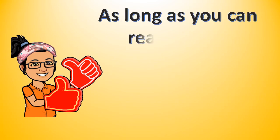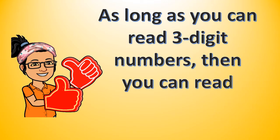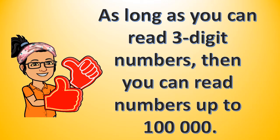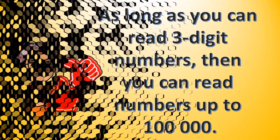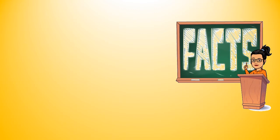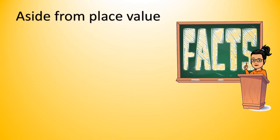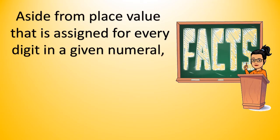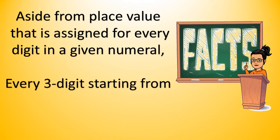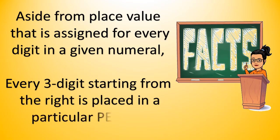Did you know that as long as you can read 3-digit numbers, then you can read numbers up to 100,000? Last time, we discussed Place Value and Value. Now, aside from Place Value that is assigned for every digit in a given numeral, every 3-digit starting from the right is grouped in what we call a period.